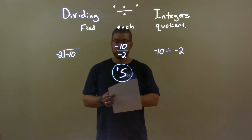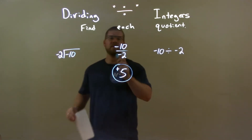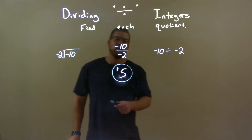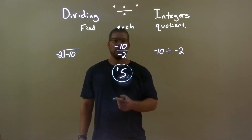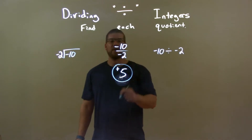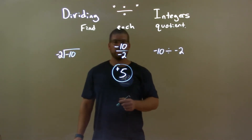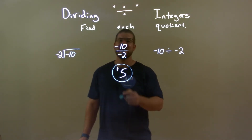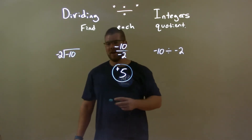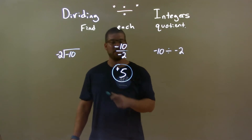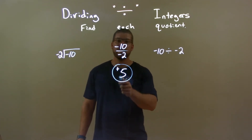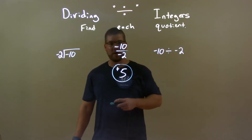Quick recap: we're given negative 10 divided by negative 2. We know that 10 divided by 2 is 5, and a negative divided by a negative is a positive. Bring them together — final answer, positive 5.